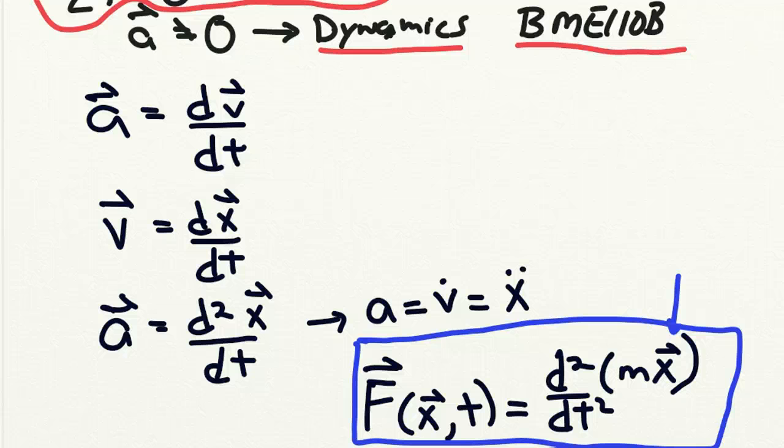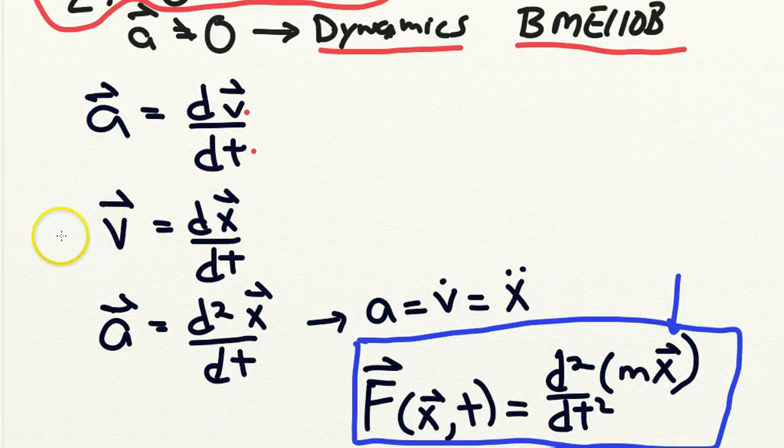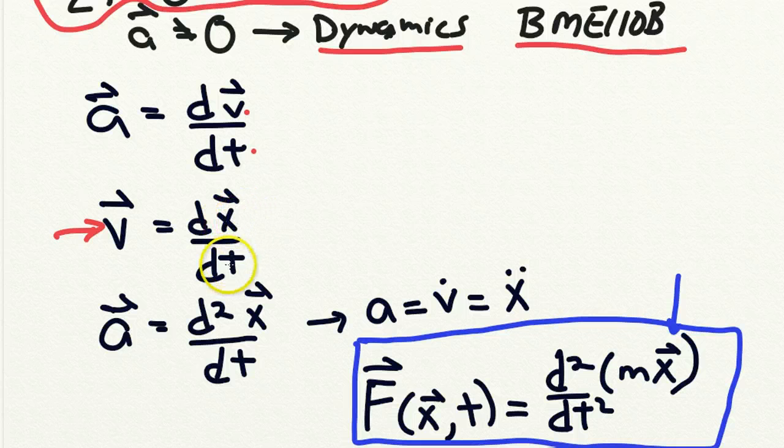Now you can write this in different ways. The acceleration vector is equal to the time derivative of the velocity vector with respect to time. And the velocity vector is equal to the time derivative of the position vector.